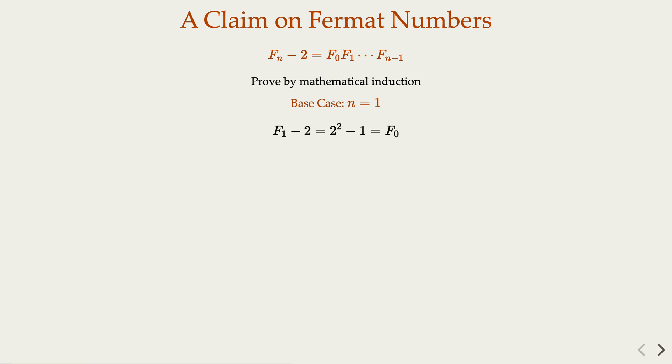So when n equals 1, F1 by definition is 5, and then if you minus 2, that will equal 3, which is F0. So you plug in the number, that can be verified.